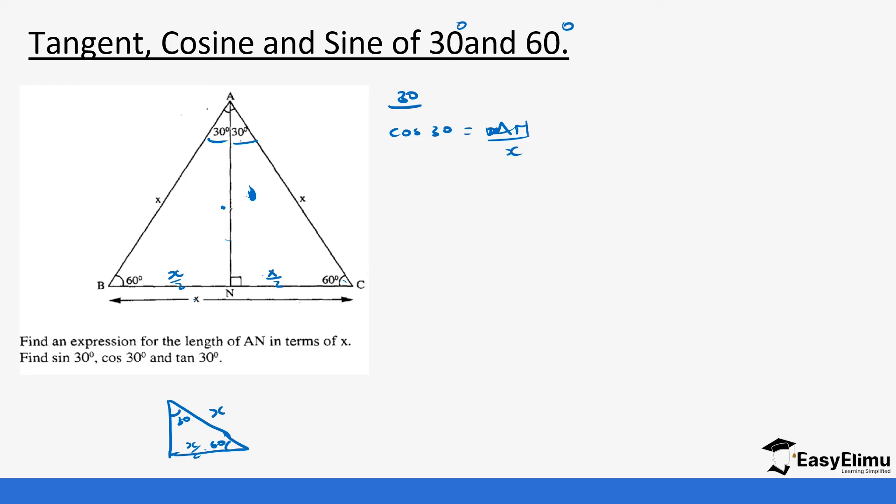Before we go to that, we need to look for the value of AN using the Pythagoras theorem. We know this side is x, this side is x over 2. So we need to get this. It means x squared is equals to x over 2 squared plus AN squared. So for us to get AN squared, it's the square root of x squared minus x squared over 4.